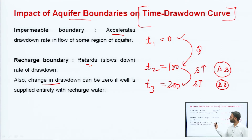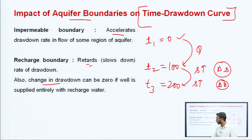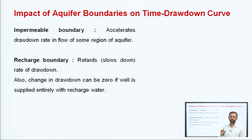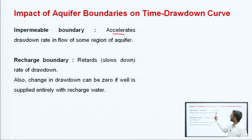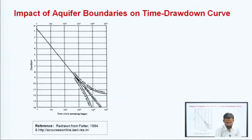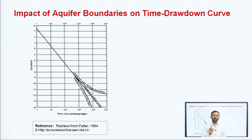Also, the change in drawdown can be zero if the well is supplied entirely with the recharge water. So if an artificial source of water is there for that well, the change in drawdown will be zero. We can understand how it accelerates or how the rate of drawdown will be zero from this curve — this curve is important.